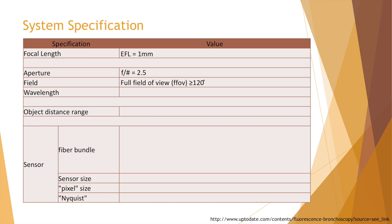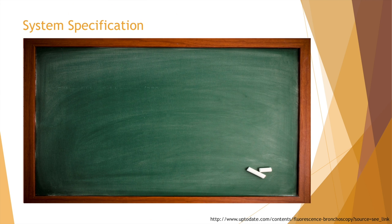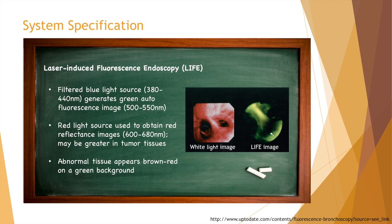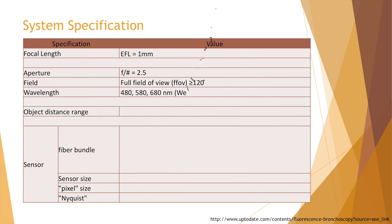Regarding wavelengths, one effective method is laser-induced fluorescence endoscopy. Under this method, abnormal tissue can be distinguished, and a green light source is used together with a red reflectance image. Therefore, our wavelengths in the design are set to be 480, 580, and 680 nanometers, all equally weighted.